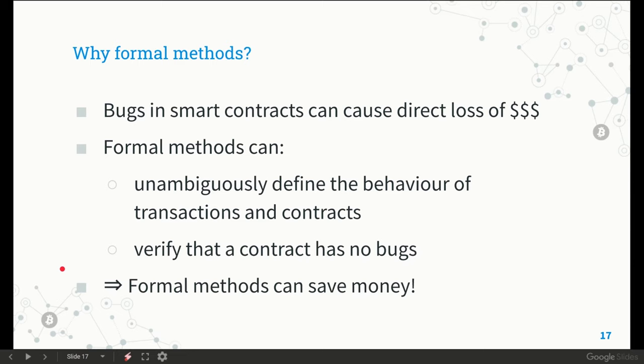One of the lessons we have learned about smart contracts is that bugs in a smart contract can cause direct losses of money. Writing bug-free contracts in Algorand is a complex task because there are many concepts the programmer must be familiar with, and many corner cases that may affect the security of a contract. Our approach is to define a formal model of the Algorand smart contracts layer. A formal model can unambiguously define the behavior of transactions and contracts, covering corner cases, and can be the basis to formally verify that the contract has no bugs and respects the intended functionality even in the presence of adversaries. A good formal model of Algorand contracts is something that allows you to save money.